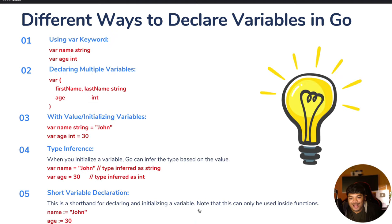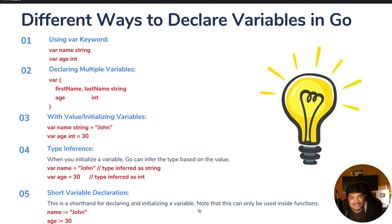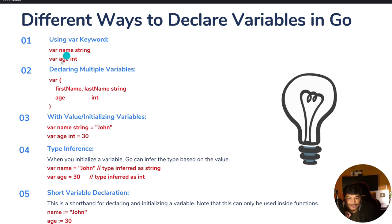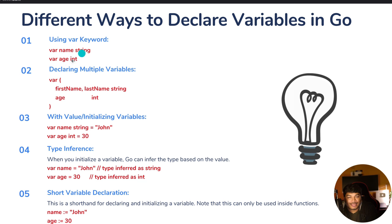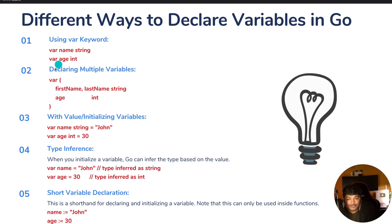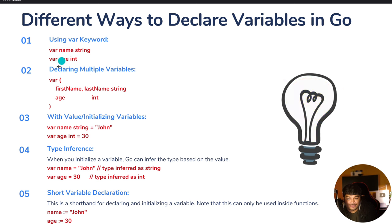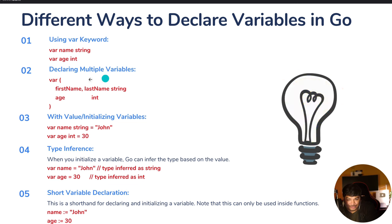Now let's learn how we can declare a variable. In Go, there are many ways to declare a variable. The first way is using the var keyword: 'var name string' defines a variable named 'name' of type string, and 'var age int' declares a variable named 'age' of type integer.